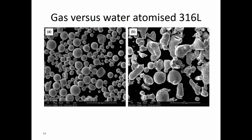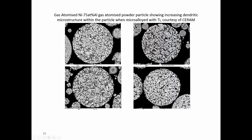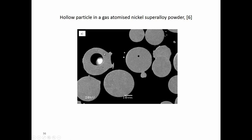Comparing gas atomized powder on the left and water atomized powder on the right for 316 stainless steel: you see a much more angular, more elongated form with water atomization. Some images show dendritic forms that grow within the particle as it solidifies — for example, nickel aluminide at 75%, which is used for catalytic powders. These are used in very large quantities to create various chemicals.